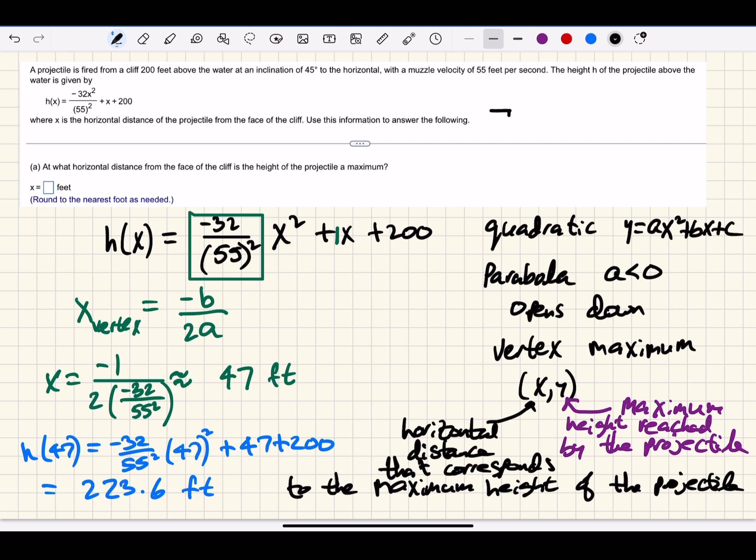If we were to draw this situation, we would have a cliff, some sort of device that is shooting a projectile, and then the surface of the water. We're told that this height of the cliff is 200 feet.